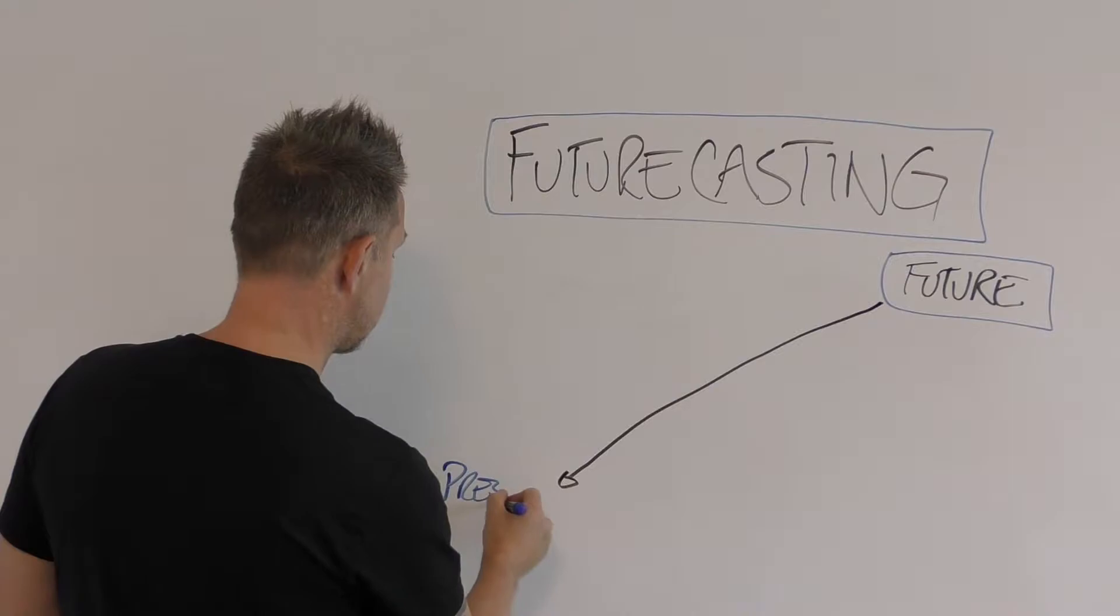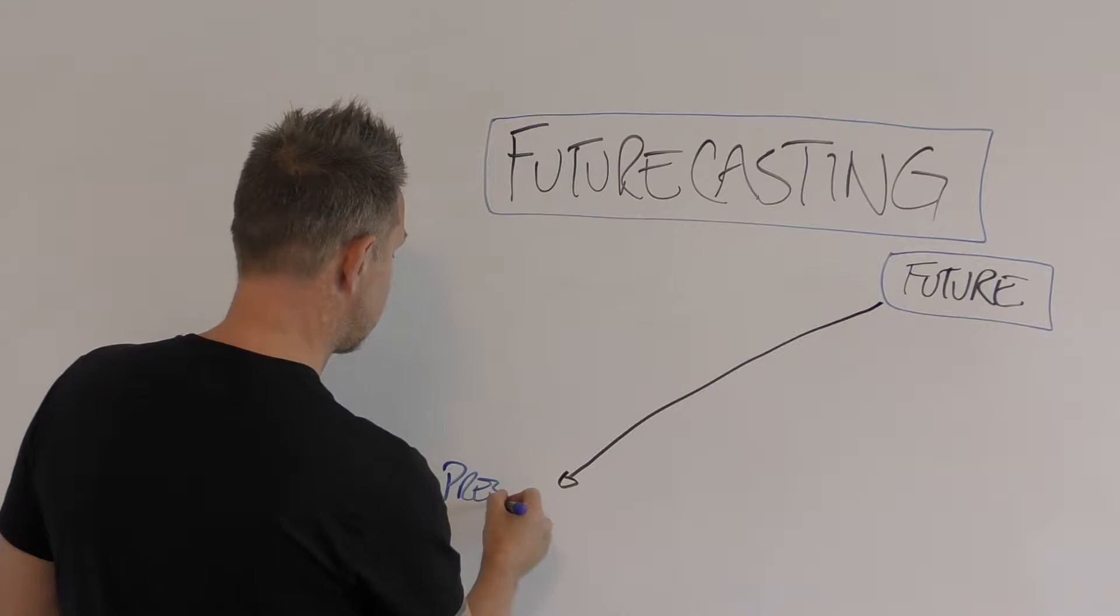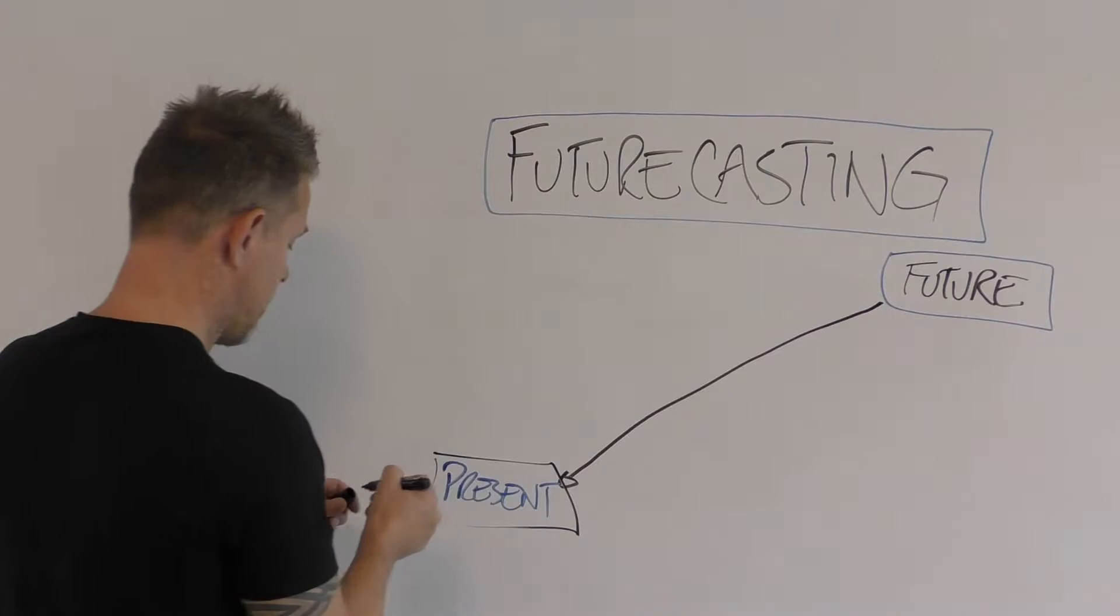And from there we're going to work backwards to here, to our present, to say this is what we have to do today. This brings us back to the present moment, and then in between that is the action steps that we need to take.